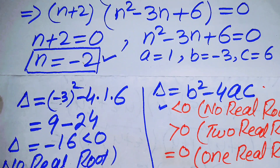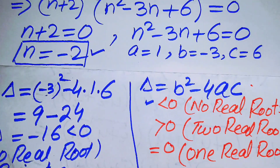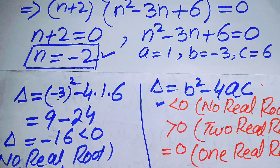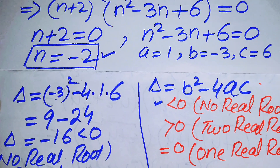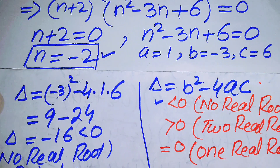Finally, we can say that n = -2 is the only real solution of this problem, and this is our final answer. Thank you so much for watching this video — please subscribe to my channel for more exciting videos.